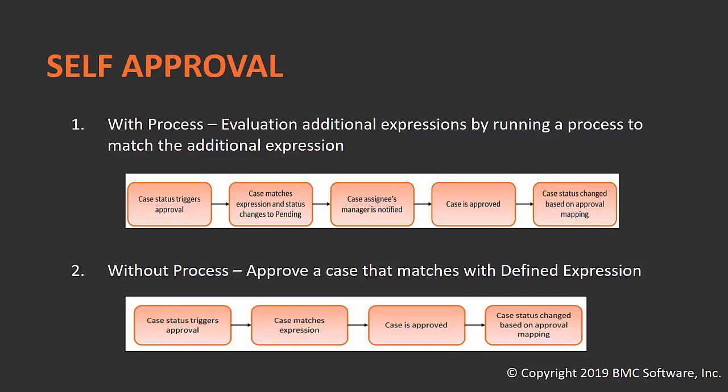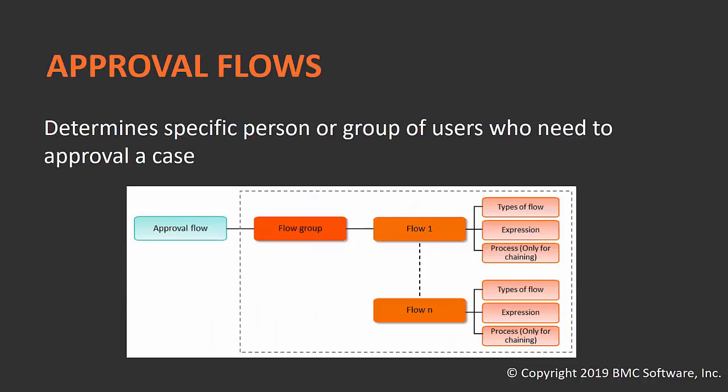Without process, self-approval does not involve a process. When the case is triggered from assigned status, it matches the expression and the case is auto-approved, with the case status changed based on the approval outcome. The second type — approval flows — determines whether a specific person or group of users needs to approve a case. Within the flow group you can define whether the request should go to a manager, director, or VP based on certain conditions, or route to the facilities head or operational head based on the operational category.